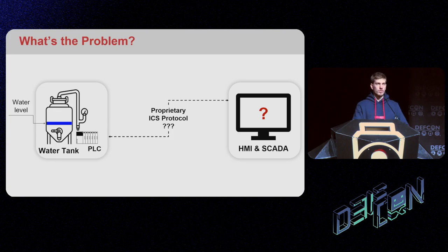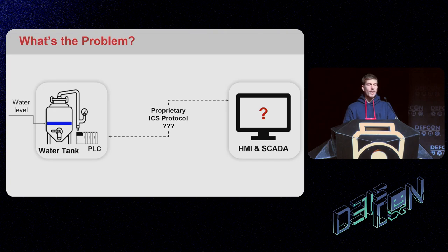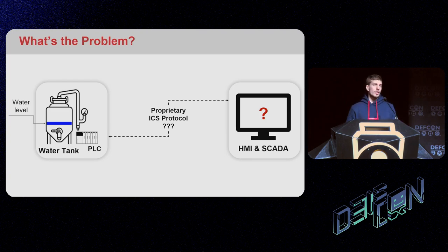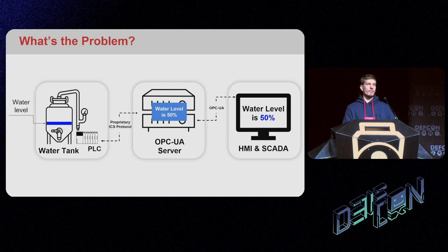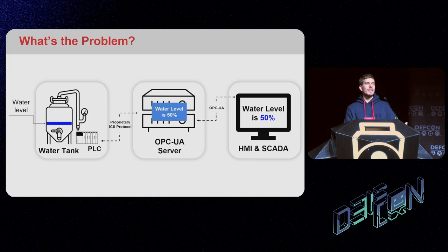These are configured as variables — the sensor reads where the water level is and we have a variable that changes in the process. If we want to monitor this procedure, from an HMI or a SCADA server, we had to use a specific proprietary ICS protocol to communicate with the PLC to read and write these tag values. That's not very convenient if you want different products to communicate with it. OPC UA was introduced to have a unified way to communicate between different devices and products within a SCADA network.